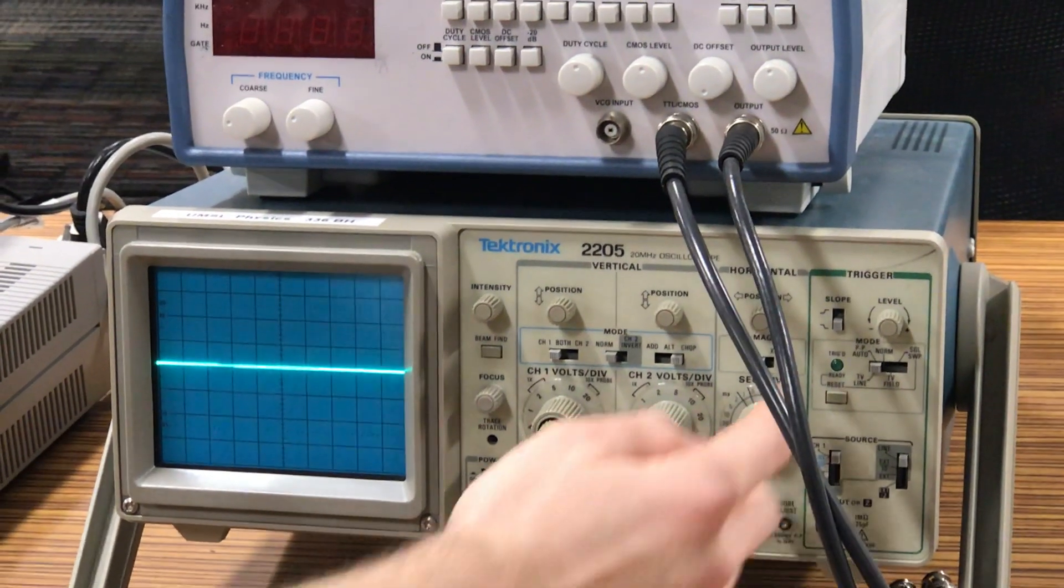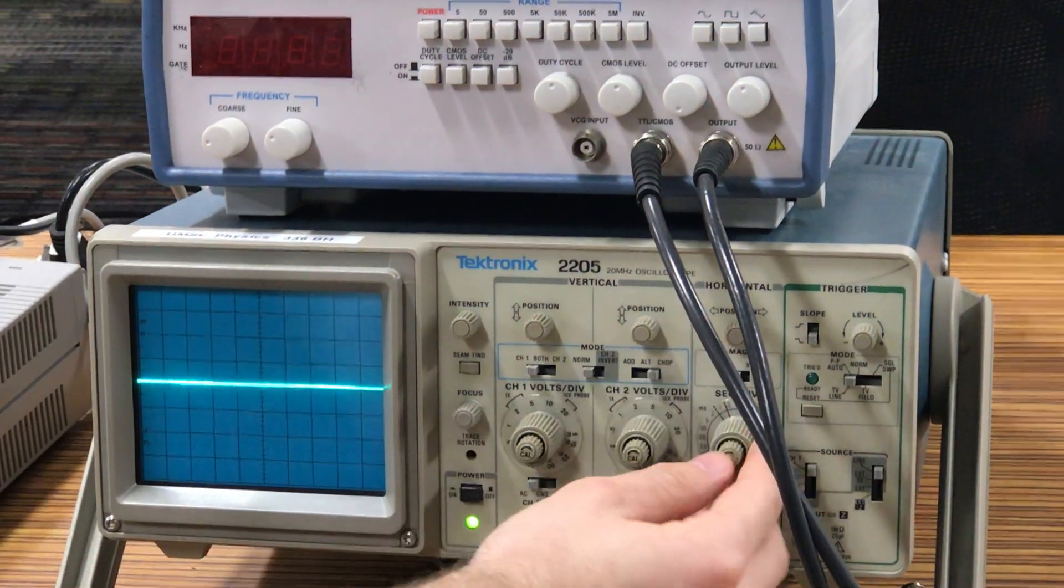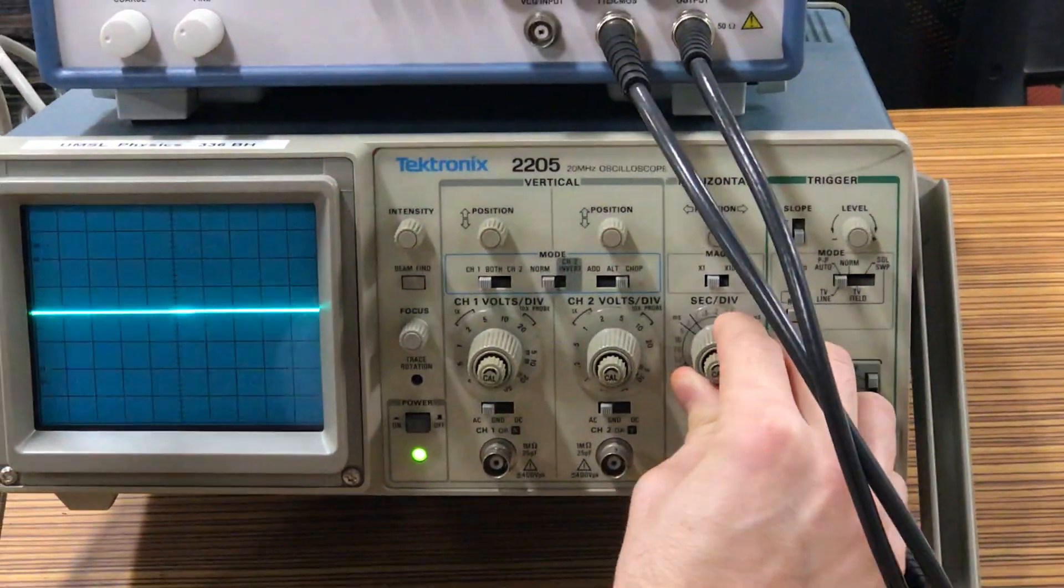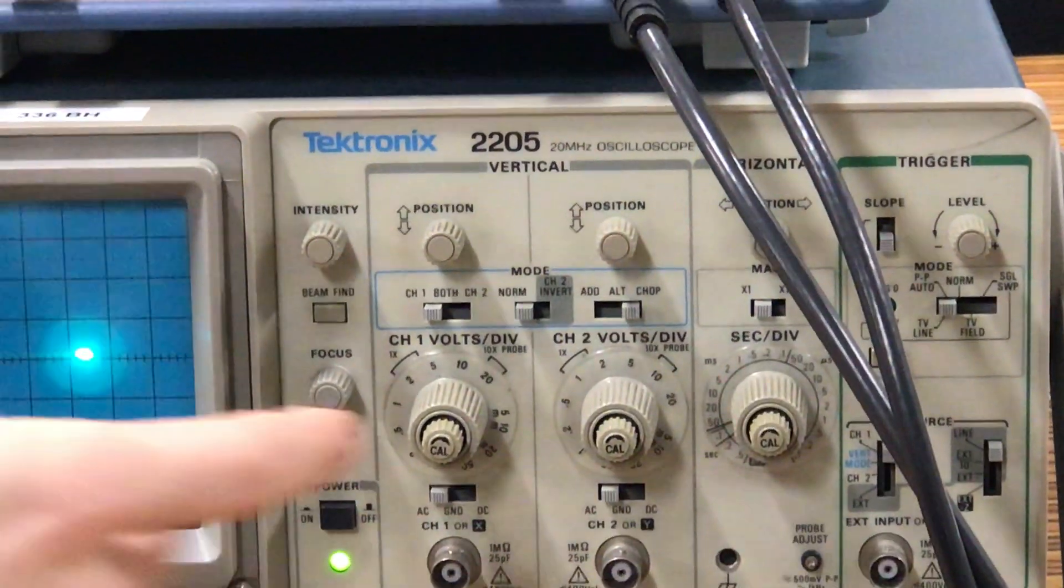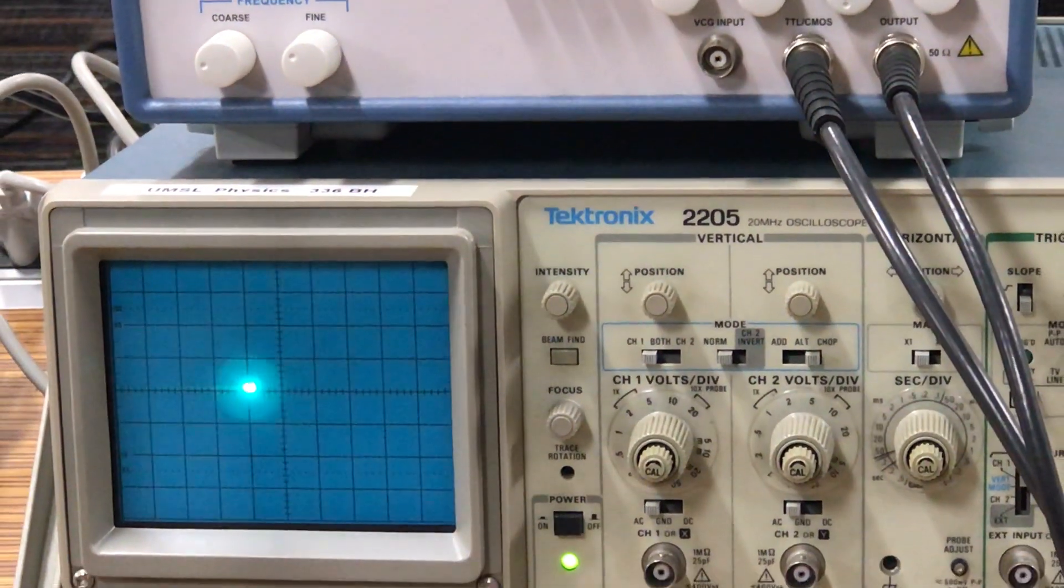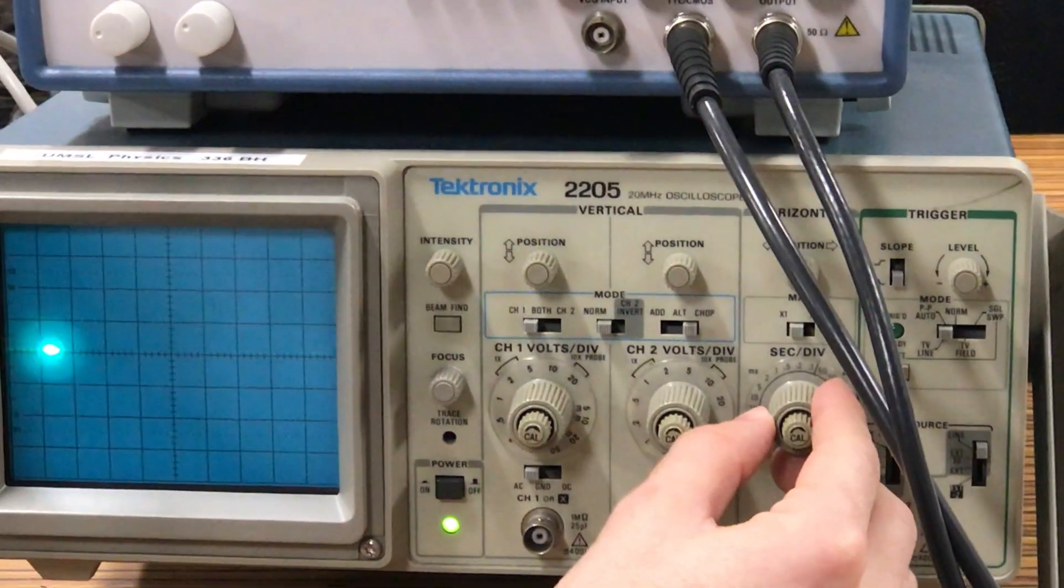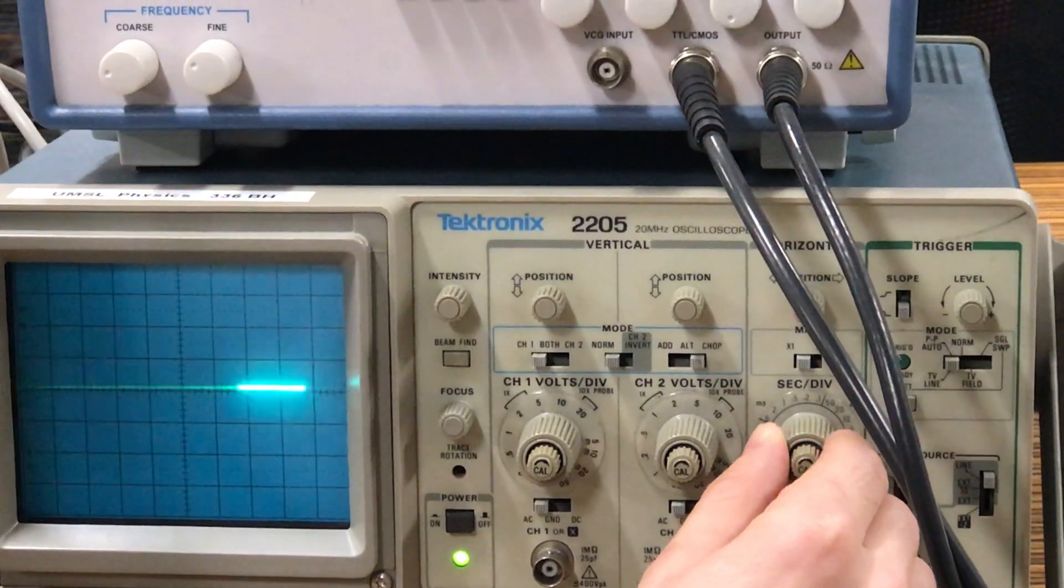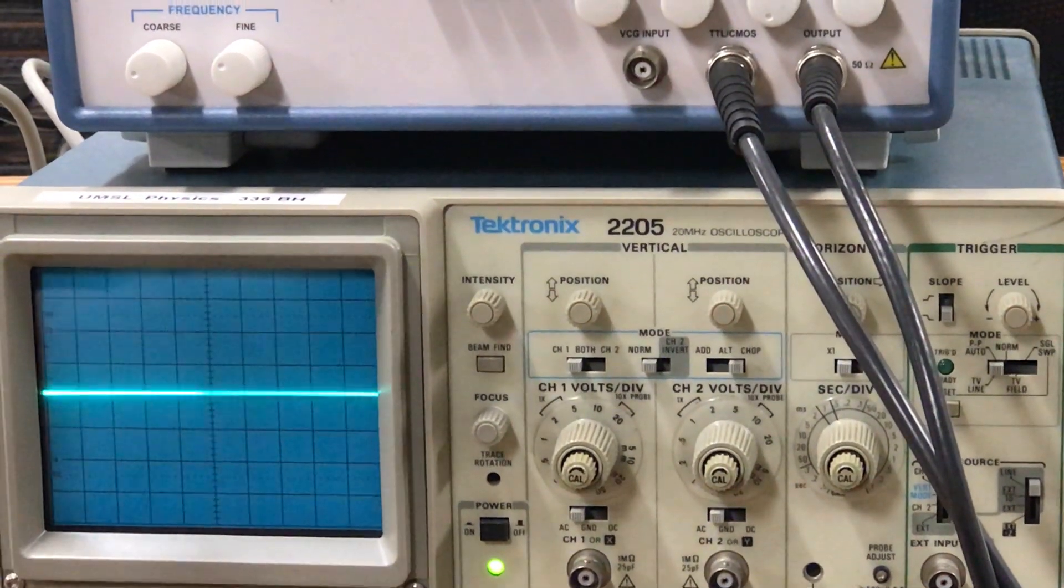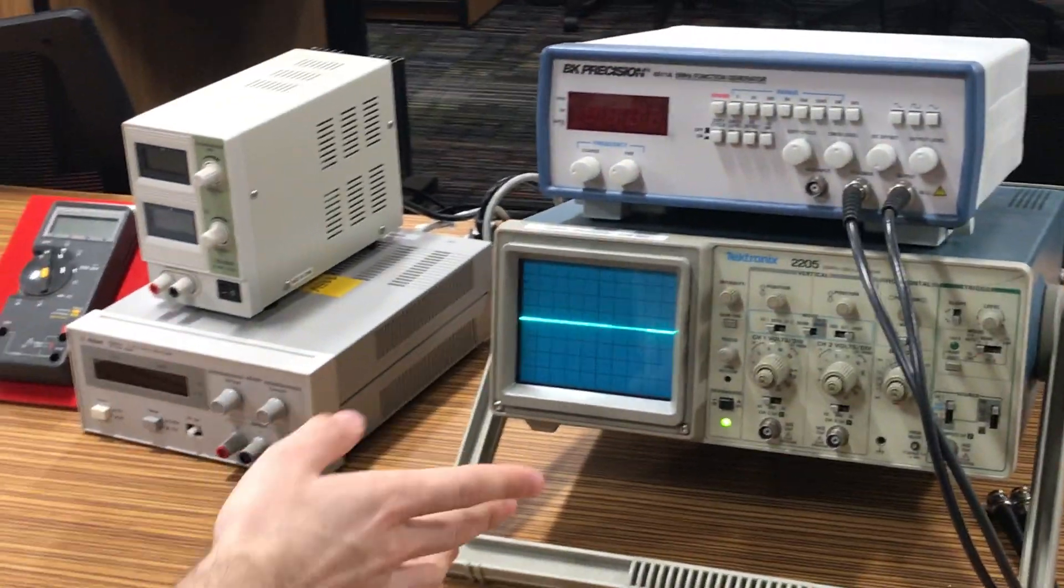The first thing we're going to look at is the seconds per division knob. This changes how many seconds each box is representative of. We'll change this to 0.1 seconds per division. So we're seeing this beam go across the screen and each time it passes through a division that's taking 0.1 seconds. If we change this to maybe 1 millisecond, now the beam is moving so fast that it appears to just be a solid line. Technically it's still passing through like before but the rate is just so rapid we can't see it moving anymore.